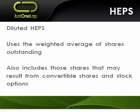In truth, the options granted and the convertible shares are in many cases a very small quantity as a percentage of the whole. The one exception might be convertible preference shares, but there are very few of those at this point — I actually can't think of any. So the impact is typically small, but nonetheless diluted headline earnings per share is the one I prefer.